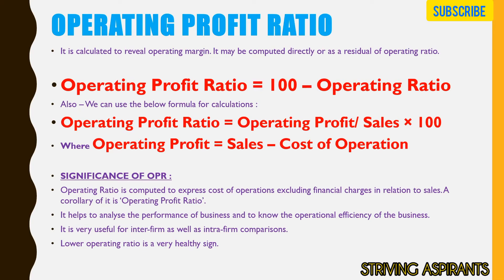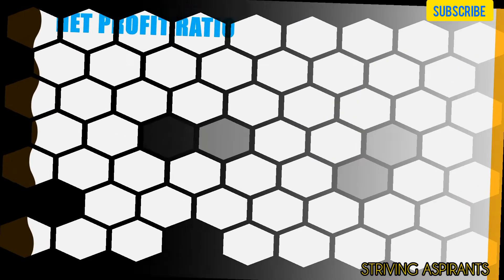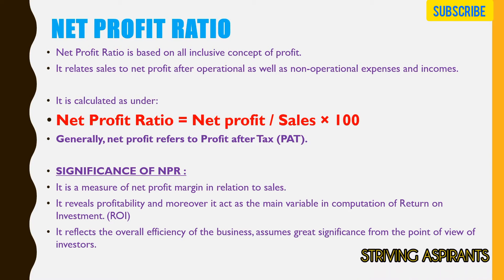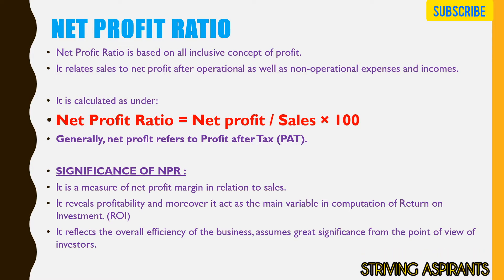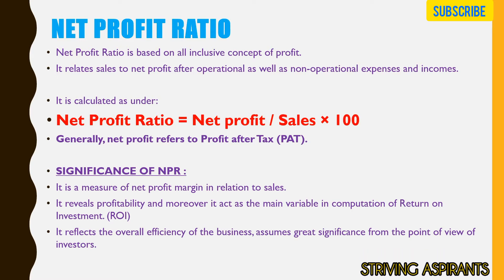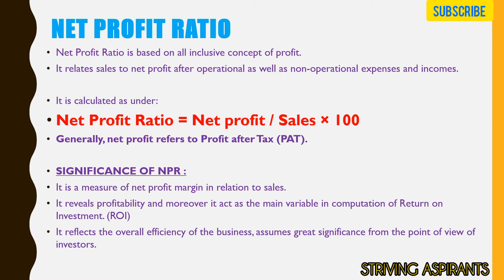Next is the net profit ratio. It relates sales to net profit after both operational and non-operational expenses and income. The calculation formula is: Net Profit divided by Sales multiplied by 100. Generally, net profit refers to profit after tax (PAT). The importance of this ratio is that it measures the net profit margin with respect to sales, is the main variable in computation of return on investment, reflects the overall efficiency of business, and assumes great significance from the point of view of investors.